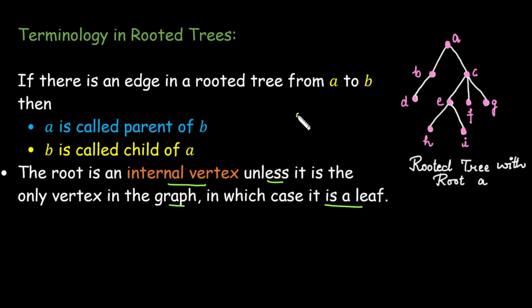It means if we have the trivial graph that contains only one vertex but there is no edge and we call it a rooted tree with root A, in this case A is categorized as a leaf rather than internal vertex because it has no children.